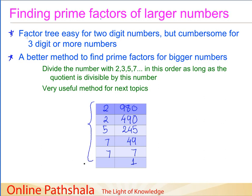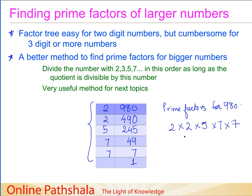The numbers we obtained are all prime numbers, and we have quickly found out the prime factors of 980. So 980 can be written as 2 × 2 × 5 × 7 × 7. This is a simpler and easier method compared to finding prime factors using a factor tree.